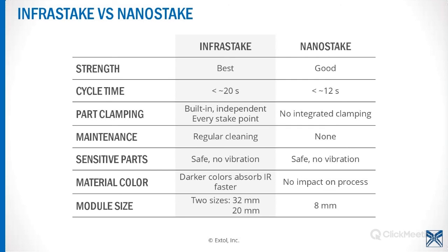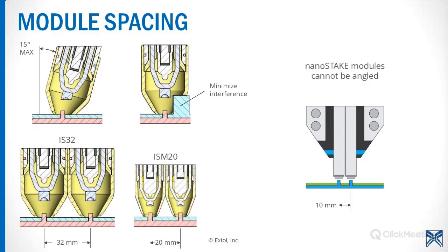Another question from Walter: what are the required clearances around the staking tool — for example, the distance from a tool to a sidewall of surrounding geometry? Typically from a design perspective, for Nanostake we would like to see 30 thousandths of an inch from the edge of the module to your part, because that module is going to create heat and we want to make sure that heat is not imparted into surrounding parts. With Infrastake, we modify the concentrator and laser weld in a little closeout — if you look at the image that says 'minimize interference' — to keep the IR energy inside of that module. Those can go very close; I've seen them actually touch the part. Keeping in mind that you do need on-center adjustability for both technologies, it's important that the tooling comes down centered over your part.